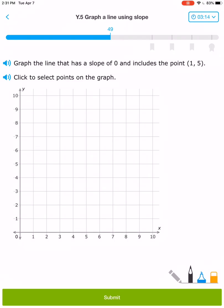Has a slope of 0 and a point of (1, 5). So if I'm going to plot (1, 5), that's 1, 5, that purple dot on the graph.